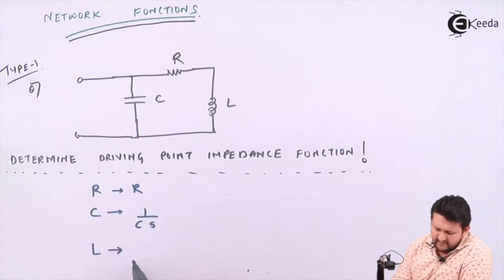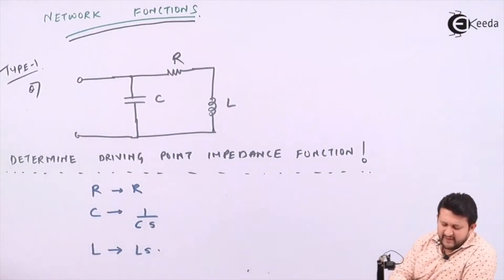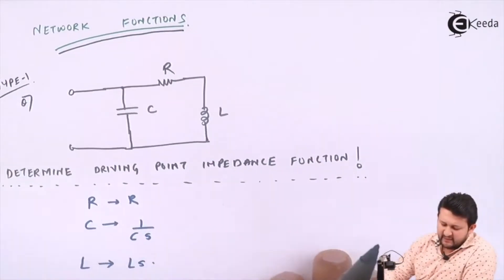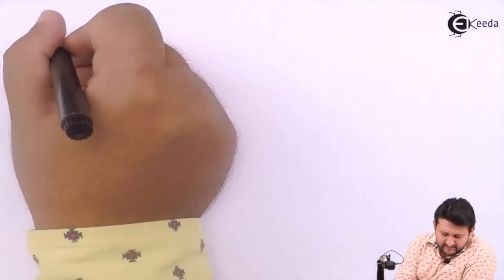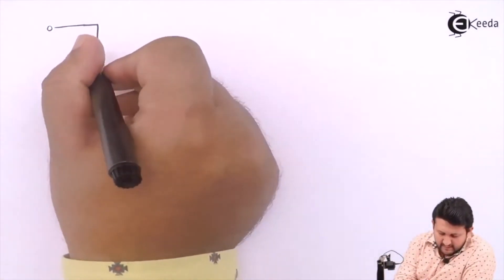So first, before finding driving point impedance, I need to convert my circuit into Laplace domain. So the capacitor will be 1 upon Cs, the resistance as it is, and your inductor is Ls.